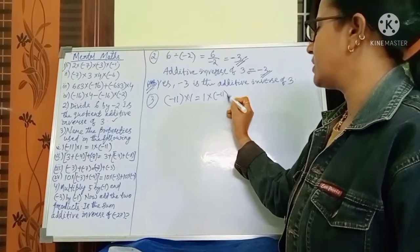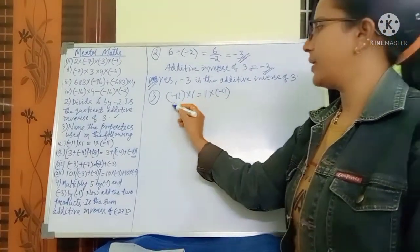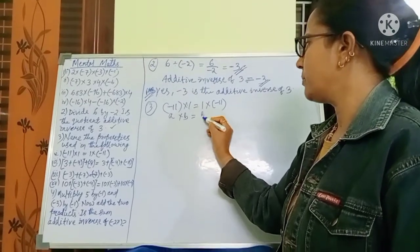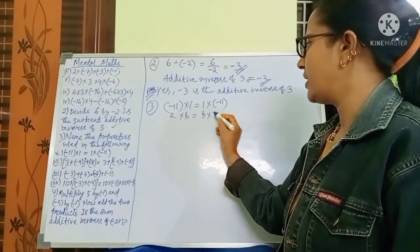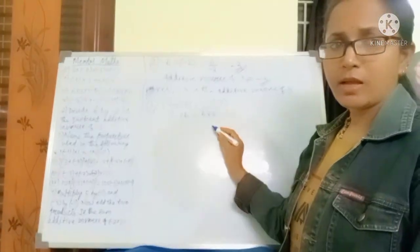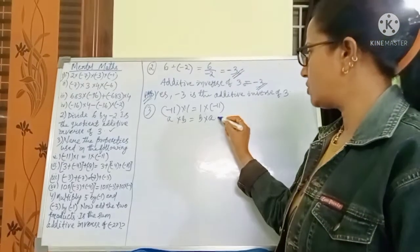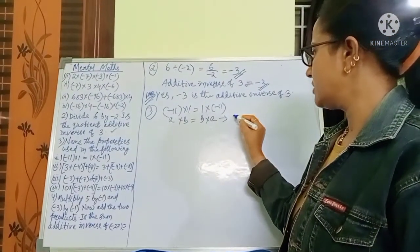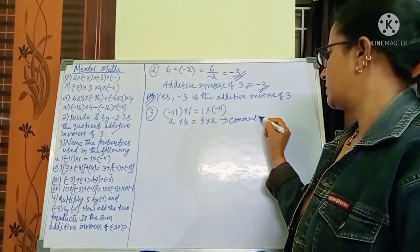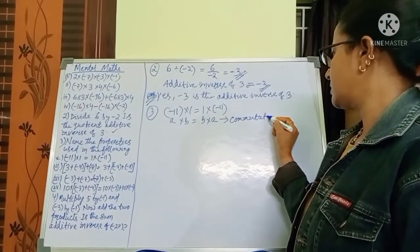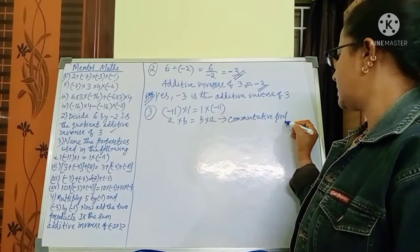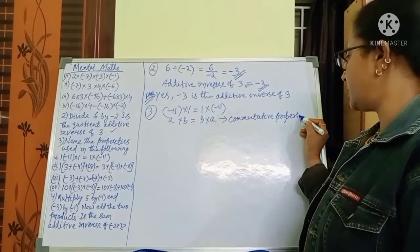Minus 3 is the additive inverse of 3. Now, A into B equals B into A — which property is this? It is the commutative property.